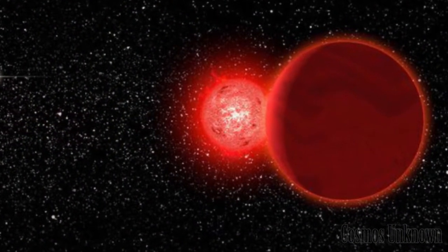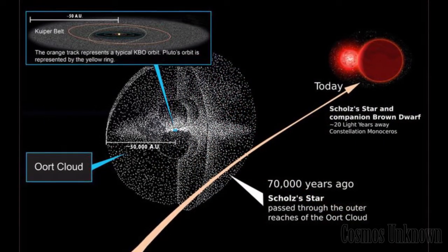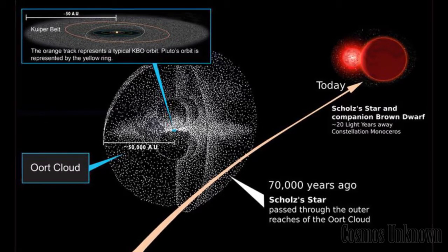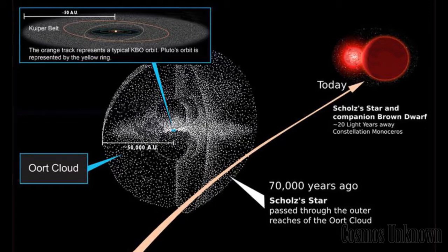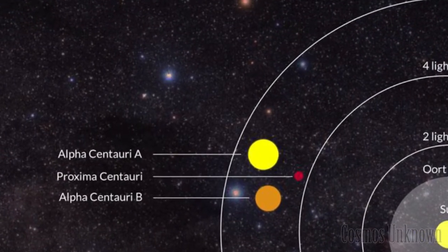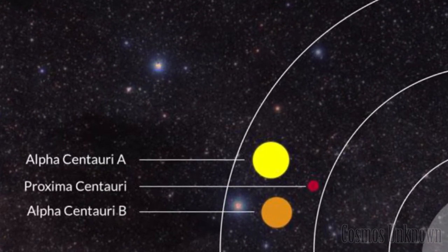Back in 2015, a team of researchers announced that a red dwarf called Scholz's star apparently grazed the solar system 70,000 years ago, coming closer than one light year to the Sun. For perspective, the Sun's nearest stellar neighbor these days, Proxima Centauri, lies about 4.2 light years away.